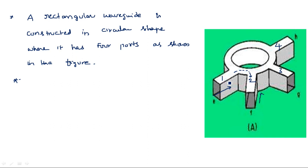Now, why is it called rat race? In normal houses, rats go into a hole and come out from another one — a rat can go in and come out from any of these holes. The name is given based on that analogy. It is a rectangular waveguide constructed in such a way that the holes are formed in this way.